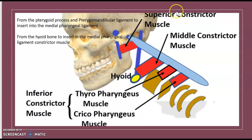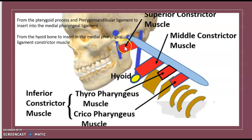The superior constrictor muscle originates from two landmarks: the pterygoid process and the pterygomandibular ligament. It goes to the medial pharyngeal ligament. The middle constrictor muscle originates from the hyoid bone and also goes to the medial pharyngeal ligament.